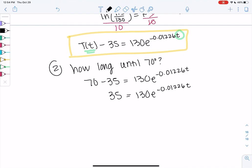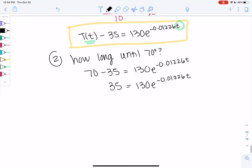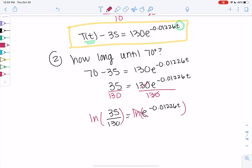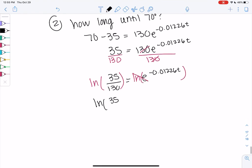Hopefully it's starting to feel a little repetitive, a similar pattern every time. So we'll divide by 130 to get that e all alone. So 35 over 130 equals e to the negative 0.01226t. And once the e is isolated, we'll go ahead and ln both sides. That's what's going to make the e cancel out. So ln of 35 over 130 equals negative 0.01226t.